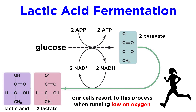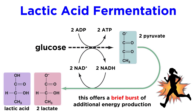In addition, human muscle cells will resort to this process when the oxygen supply is running low, most typically during prolonged periods of strenuous exercise, when glucose catabolism is going faster than our ability to breathe enough oxygen into the bloodstream to sustain the activity. In such a case, the cells will switch over to fermentation, allowing for a brief burst of additional energy production, but the lactic acid that builds up in the muscles during this activity causes muscle fatigue, which limits the duration that this activity can be sustained.